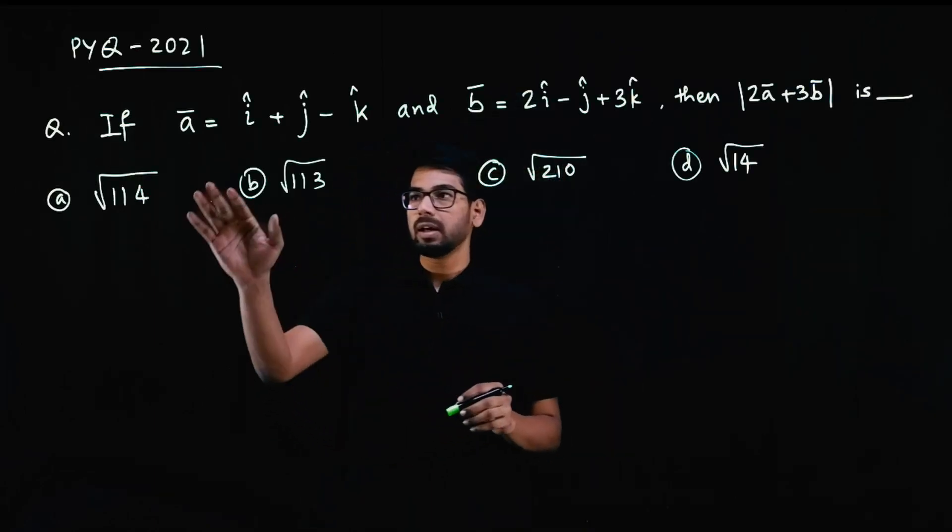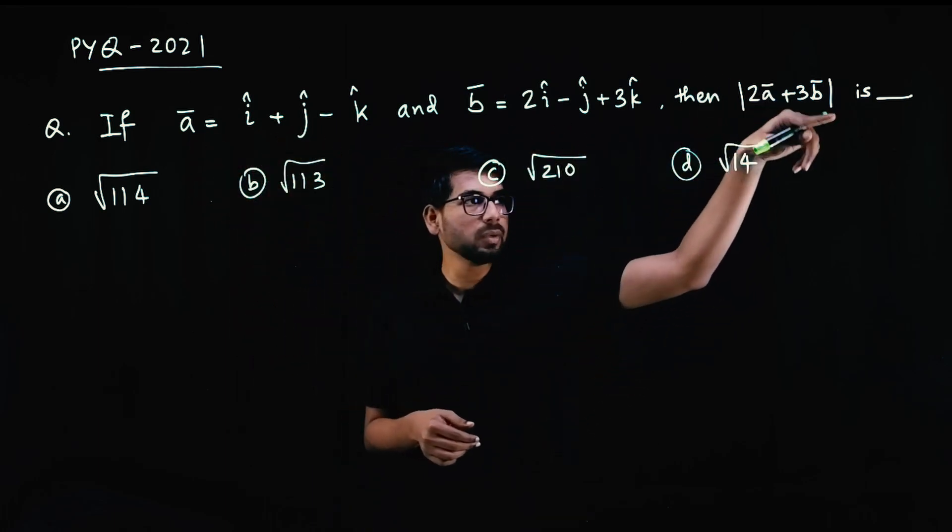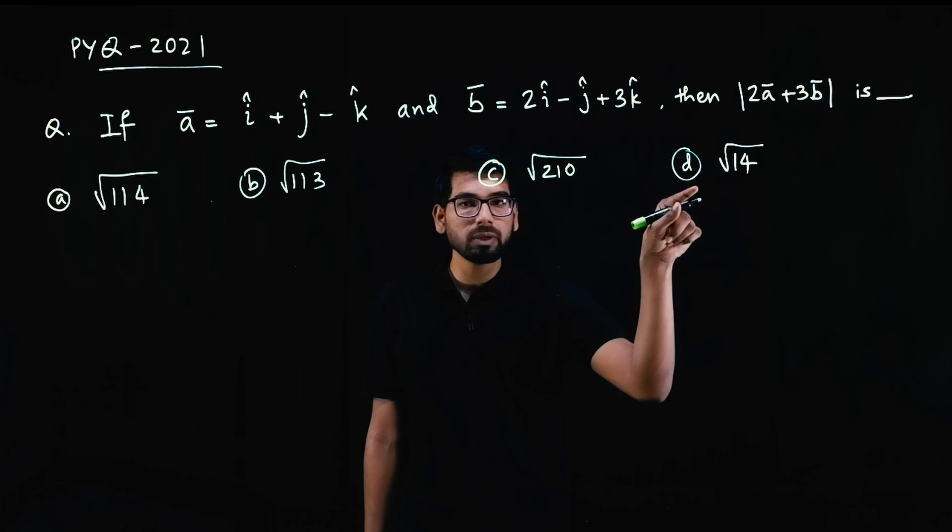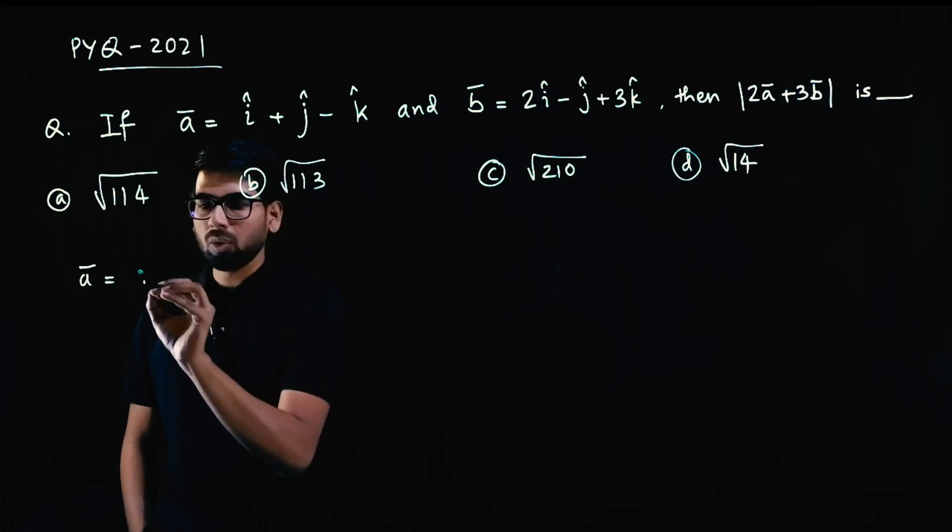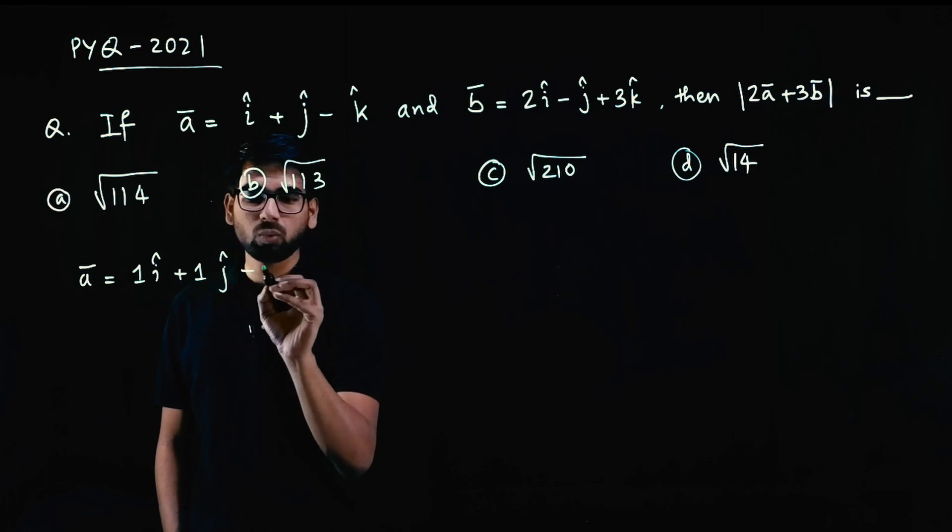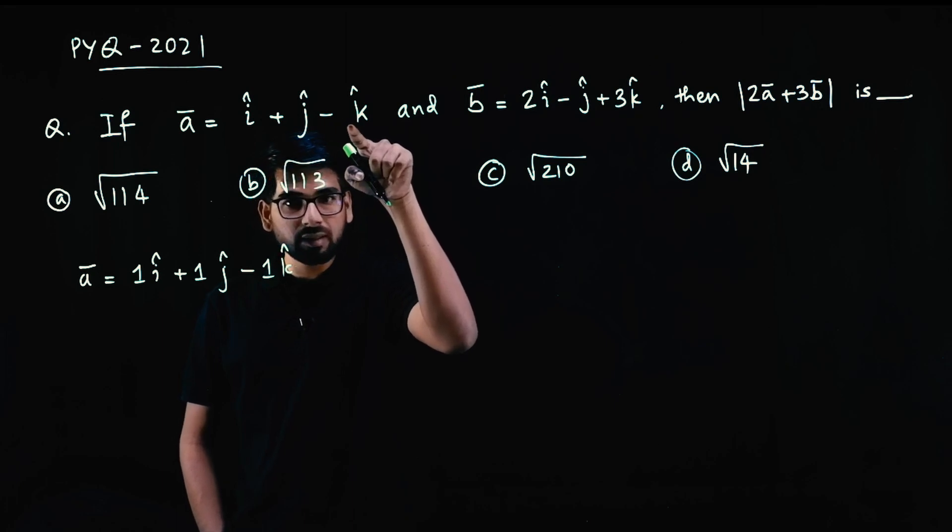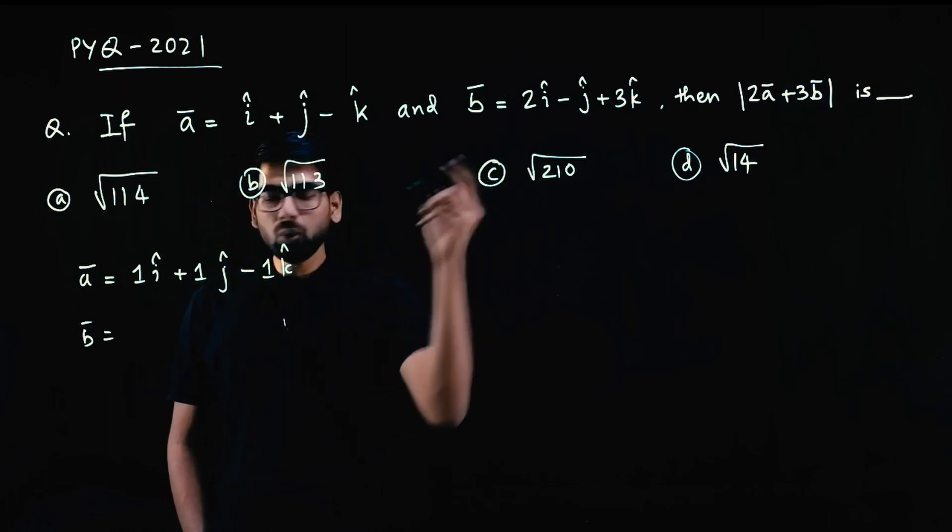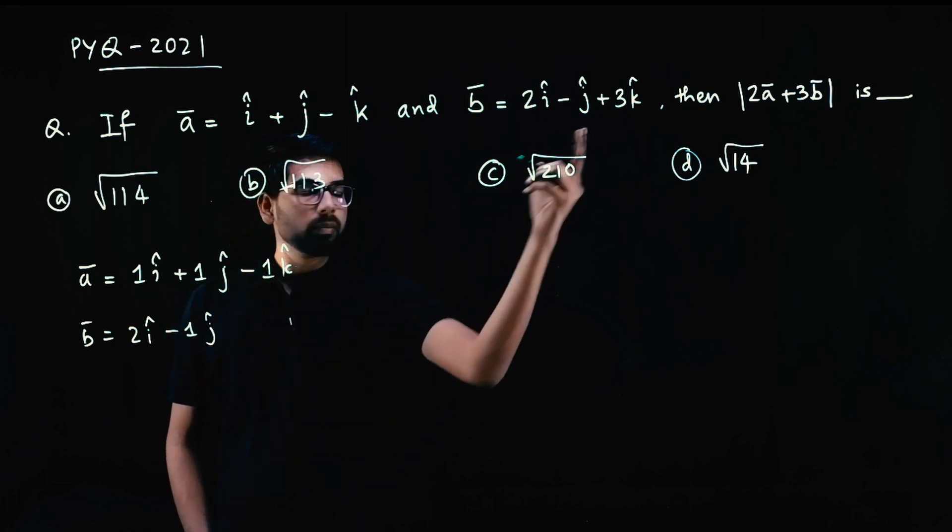If a vector is this and b vector is this, then we need to find the magnitude of 2a plus 3b. So a vector multiply by 2, b vector multiply by 3, add them - straightforward question. So a vector is 1i plus 1j minus 1k. If you don't have any coefficient, the coefficient is 1. So b vector is 2i minus 1j plus 3k.